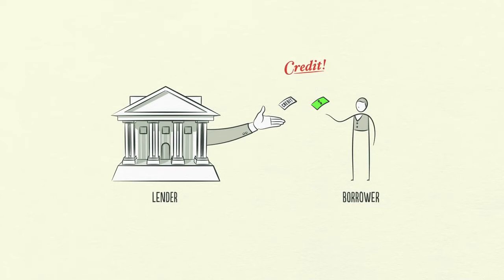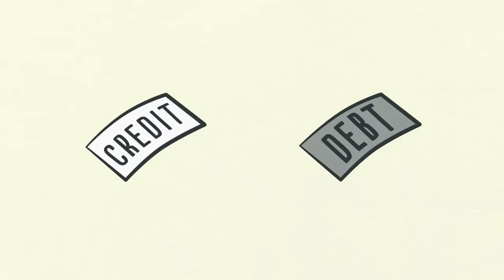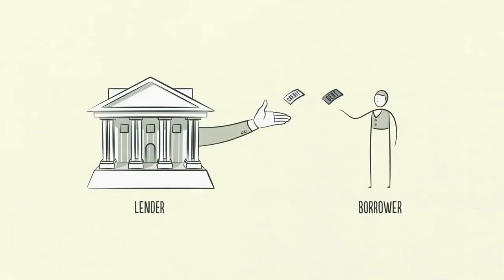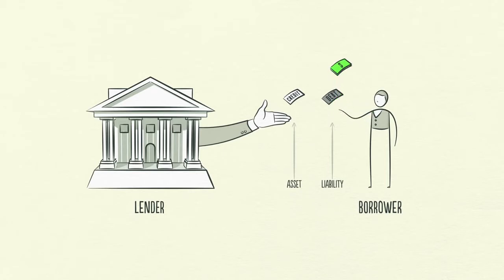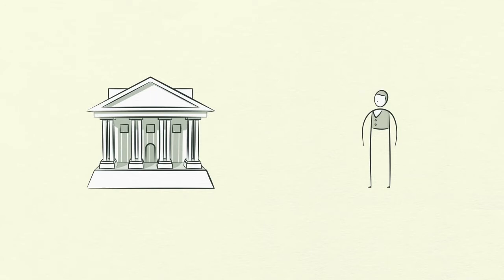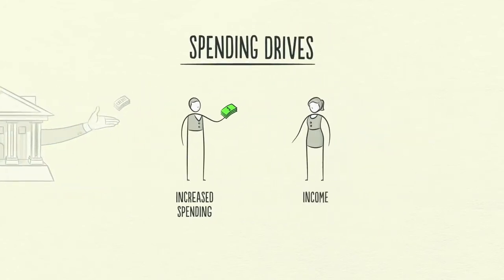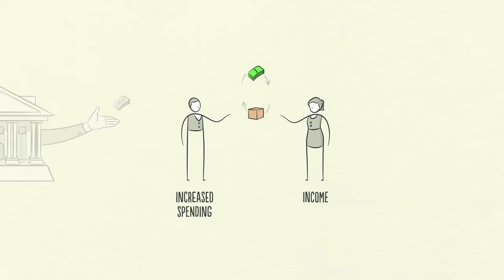Any two people can agree to create credit out of thin air. Credit is tricky because it has different names. As soon as credit is created, it immediately turns into debt. Debt is both an asset to the lender and a liability to the borrower. In the future, when the borrower repays the loan plus interest, the asset and the liability disappear, and the transaction is settled. So why is credit so important? Because when a borrower receives credit, he is able to increase his spending. And remember, spending drives the economy. This is because one person's spending is another person's income.